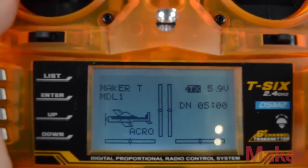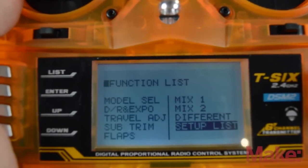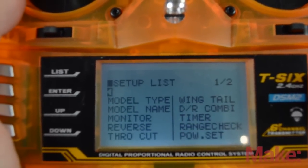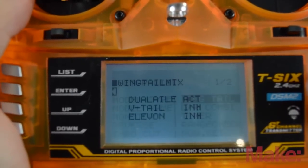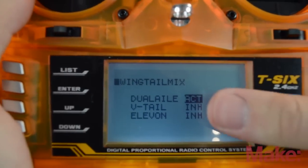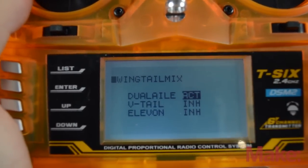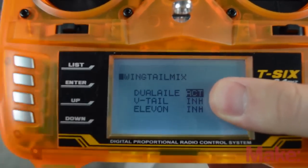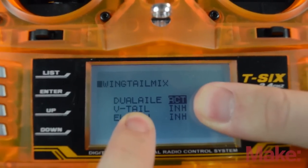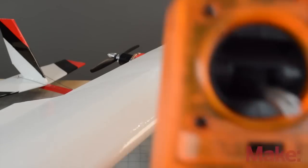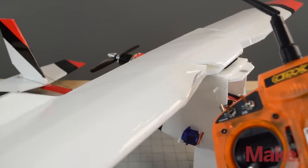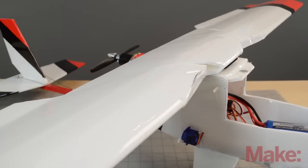Okay so once we have these installed then we're going to go to our radio and then change a couple settings. So going into the menu we're going to go over to setup and then we're going to go over to wing tail. Now we're going to activate dual aileron. I already have mine activated but this is what we activate to do flapperon so that mixes the aileron and auxiliary channels together. And then once we look back at the plane we can see that when we move the aileron stick the ailerons work as normal.